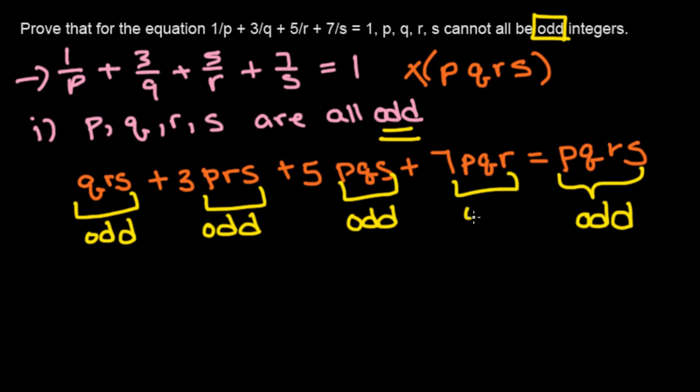So each term on the left side is going to be odd. And we have an even number of odd terms. So when we add all of these, it's going to be even.